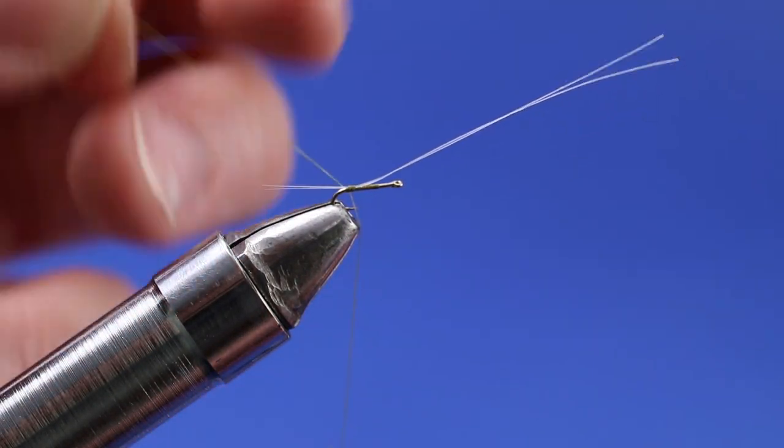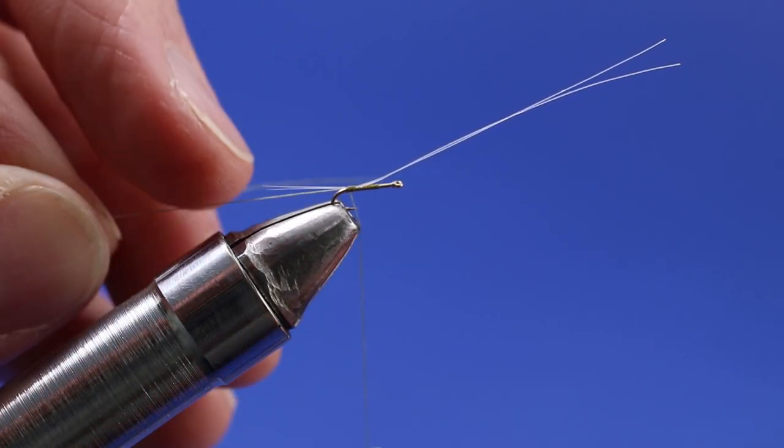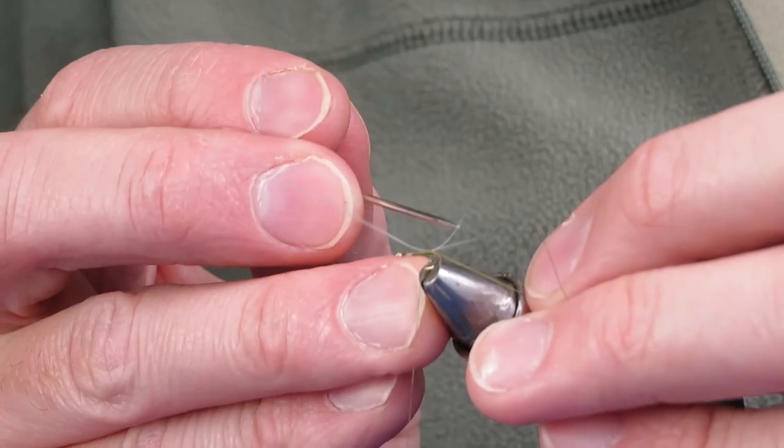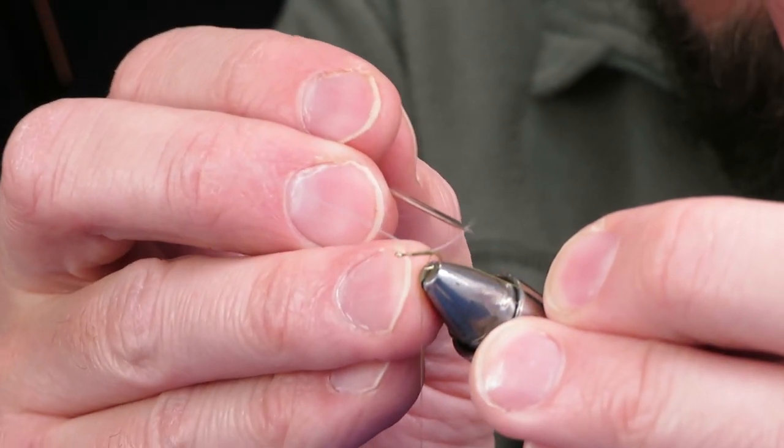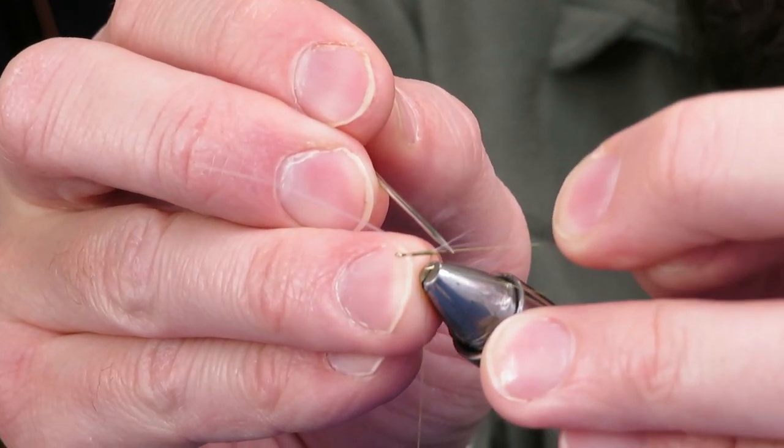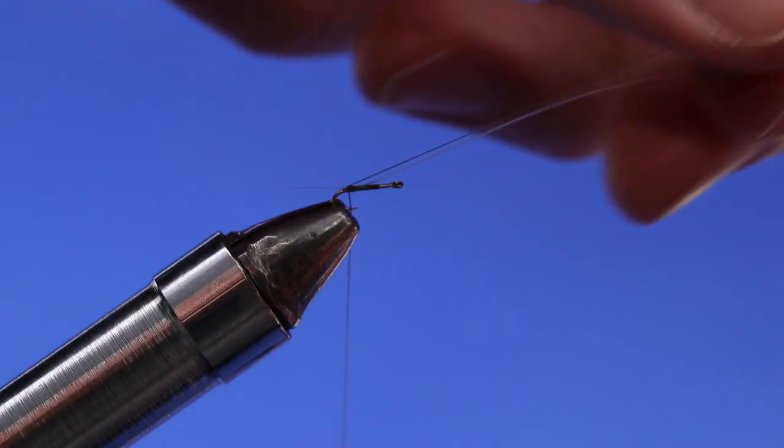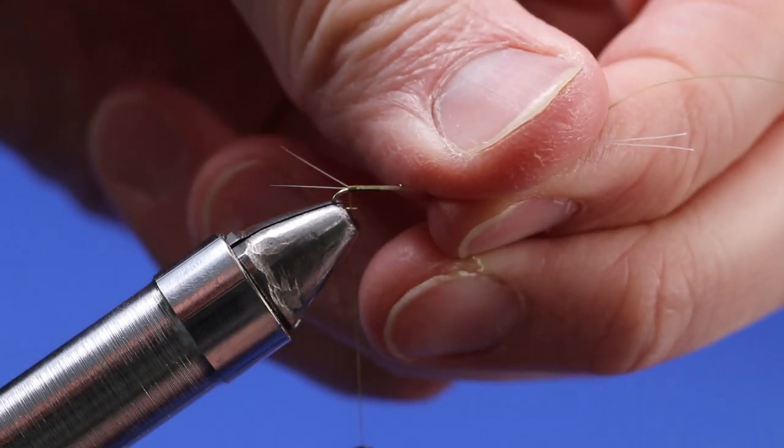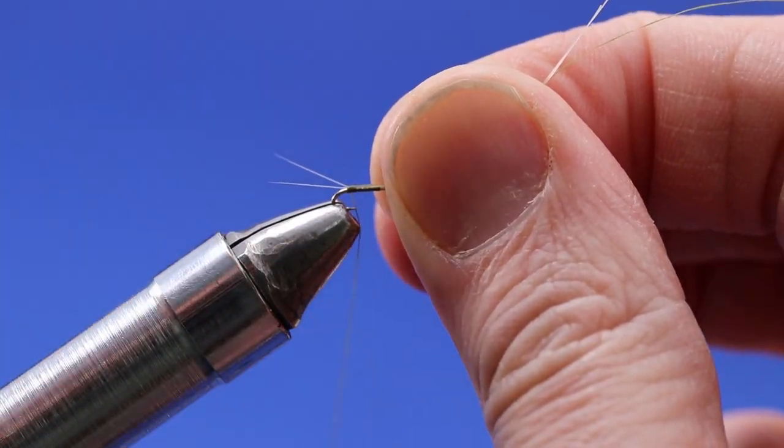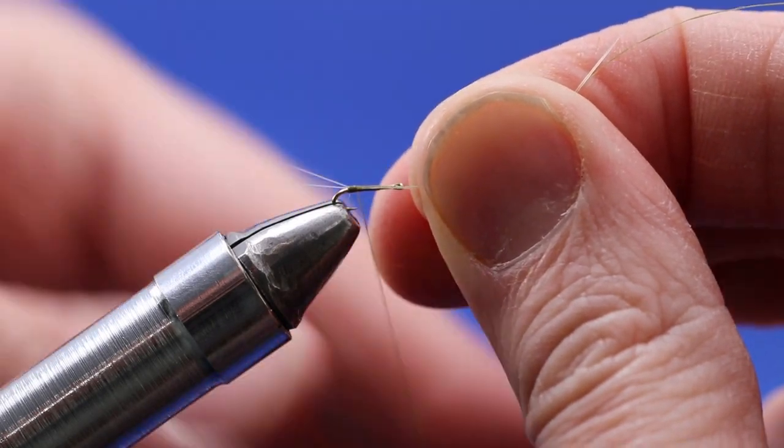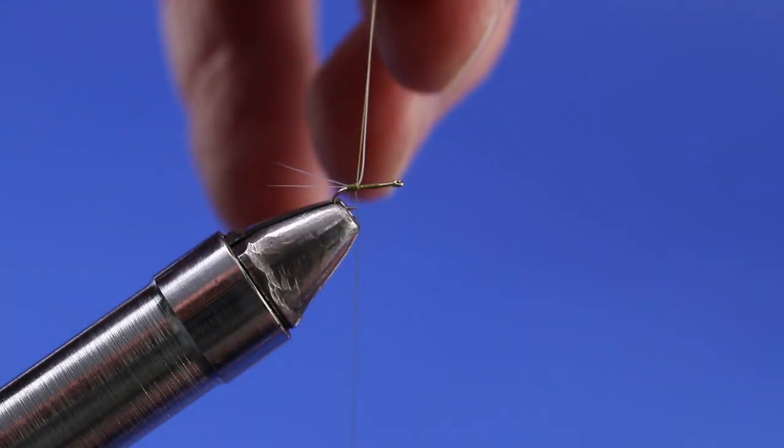Once I get them where I want, I take that tag end that I left there and I'm going to get it between the fibers. You might need your bodkin to help you out here to be able to see them and get them to split. Once you do, run that tag end in between them and pull forward. The harder you pull forward, the more it will splay out those tail fibers. Once you have them how you want, do another couple wraps forward. That's the hardest part of this fly right there.